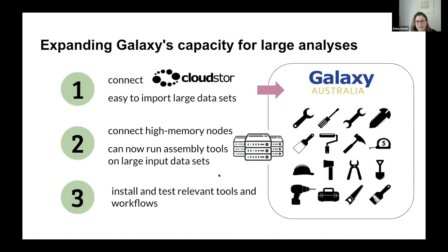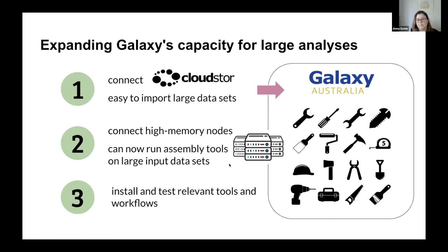To make Galaxy ready to run these analyses, several things have been done: connecting CloudStore so large datasets can be easily imported, connecting high-memory nodes to run tools with large datasets, and installing new assembly tools. We've tested this on several genomes — one of the first was a plant genome that took about a day to assemble. The full assembly process takes longer with many steps before and after, but the quick turnaround means researchers can feasibly rerun analyses with different settings to compare outcomes, rather than waiting several months.